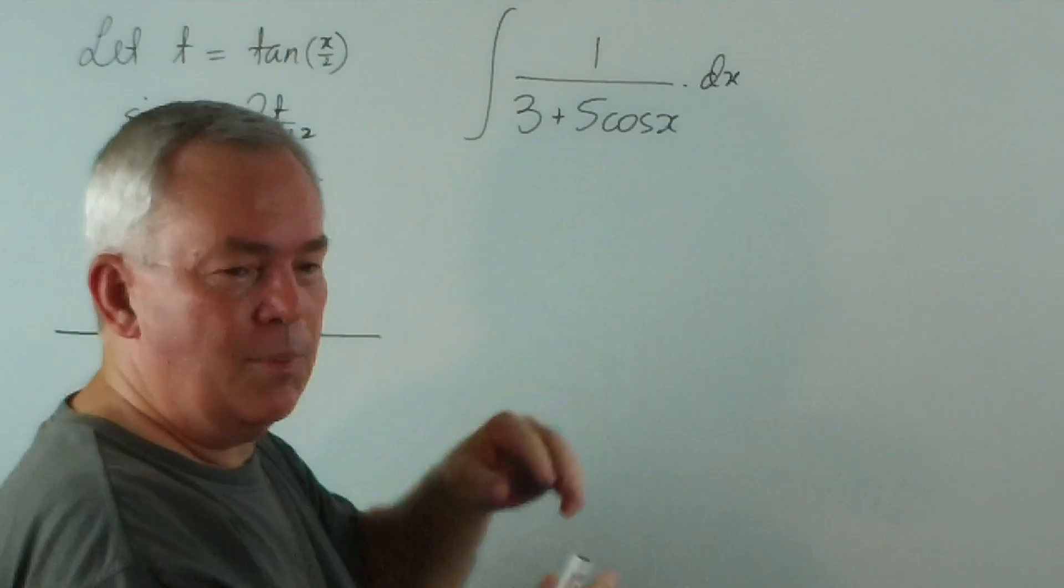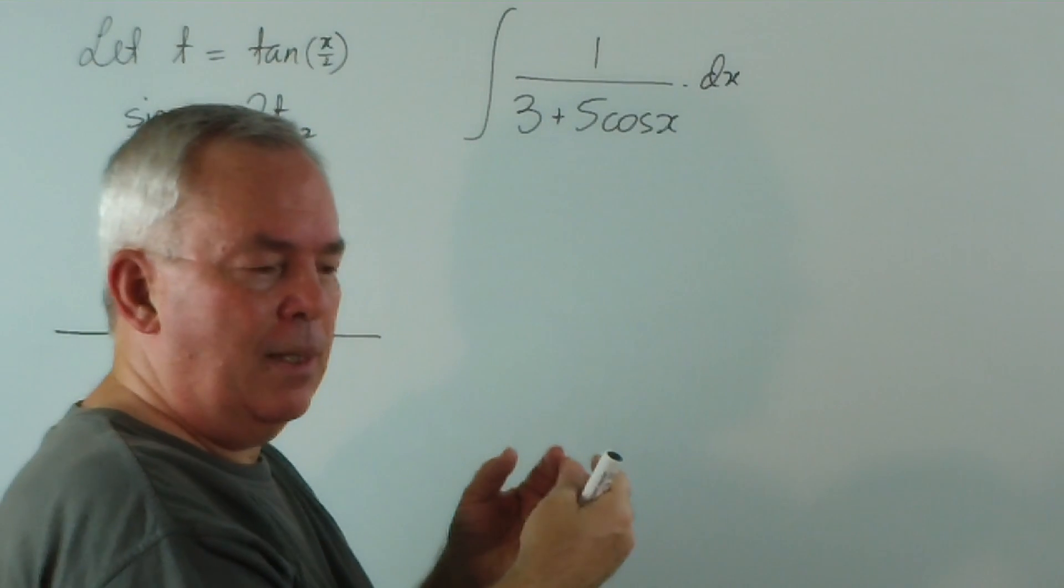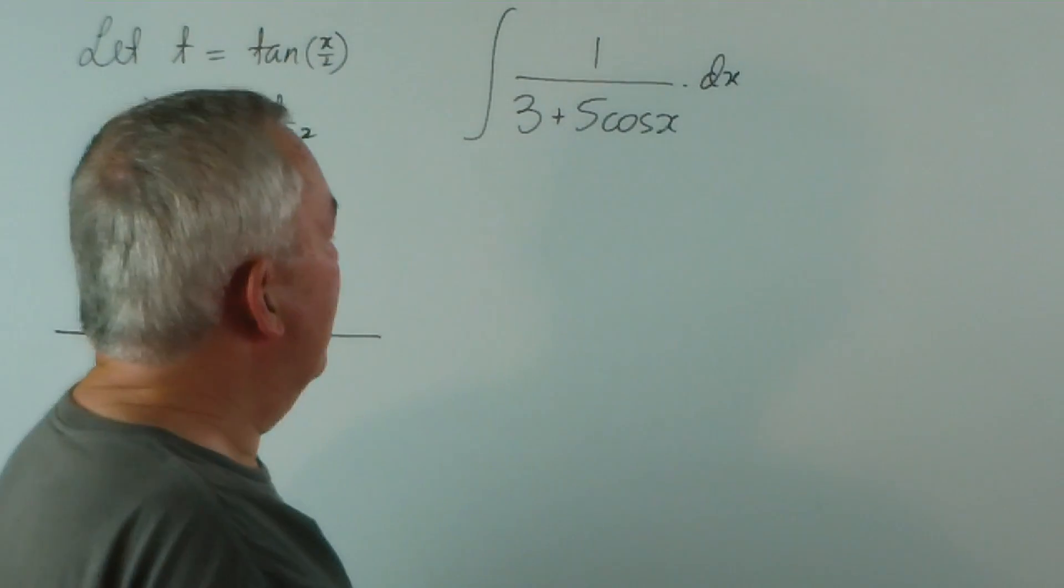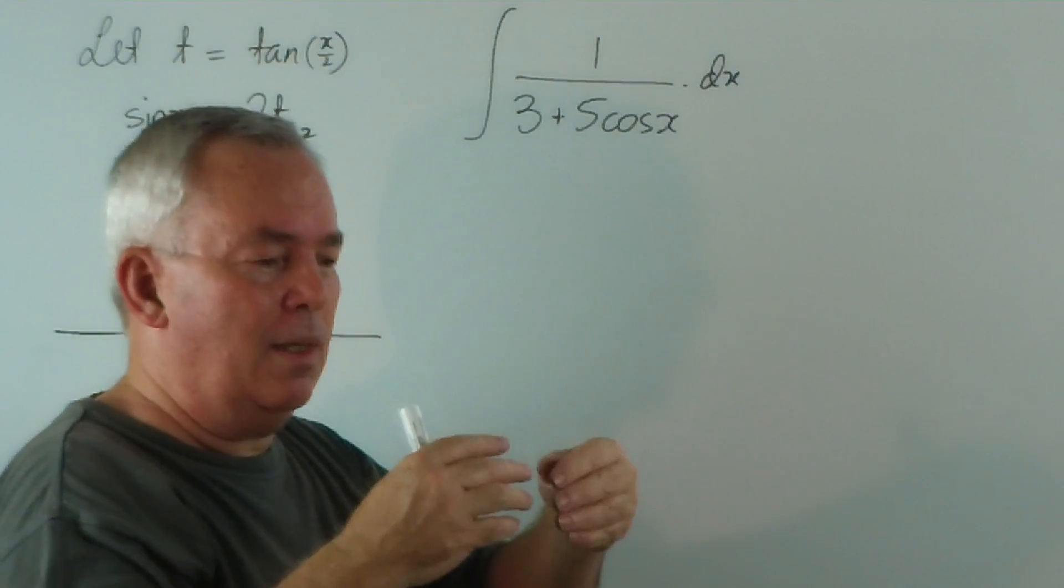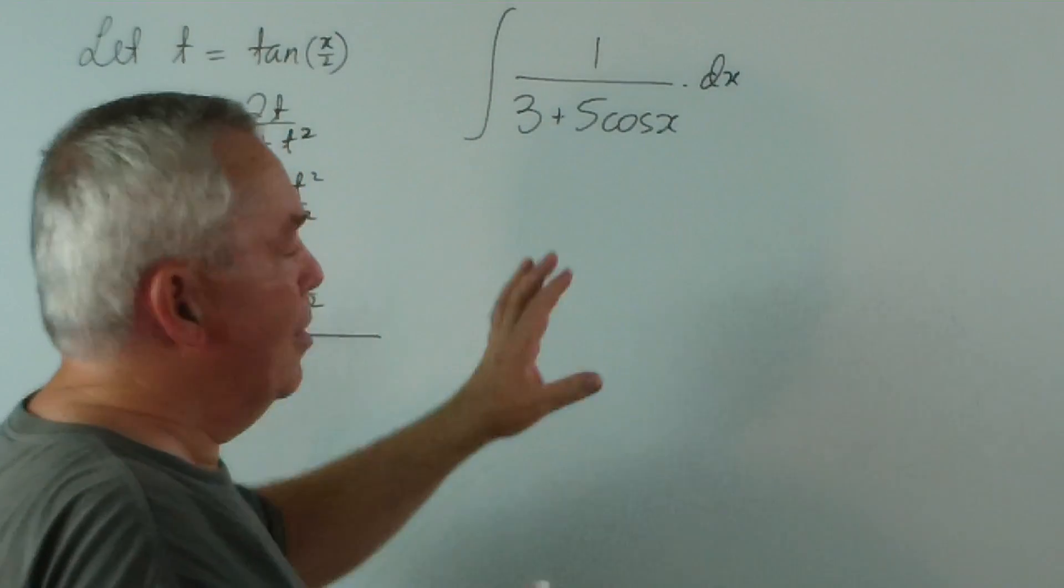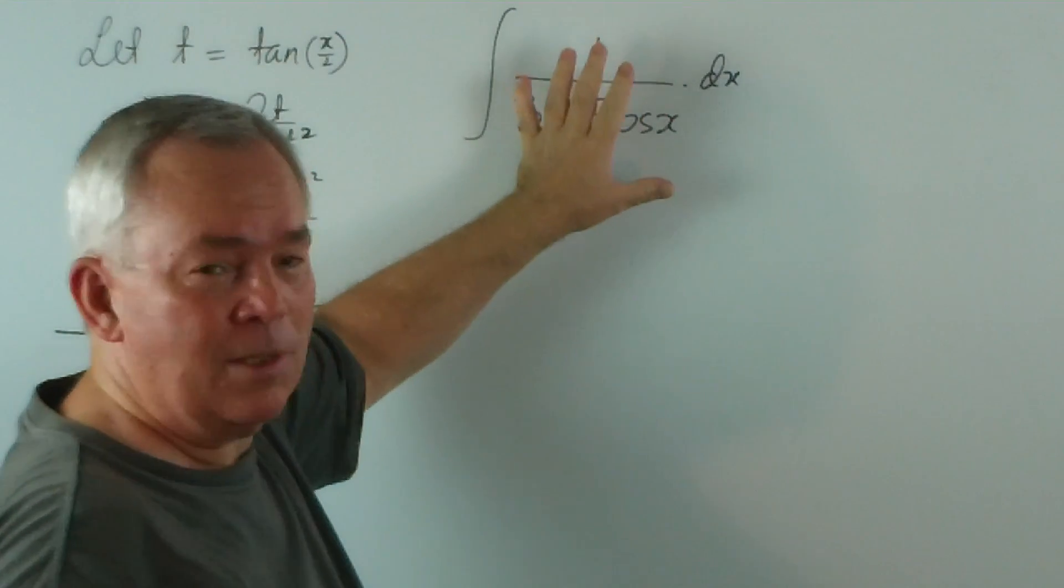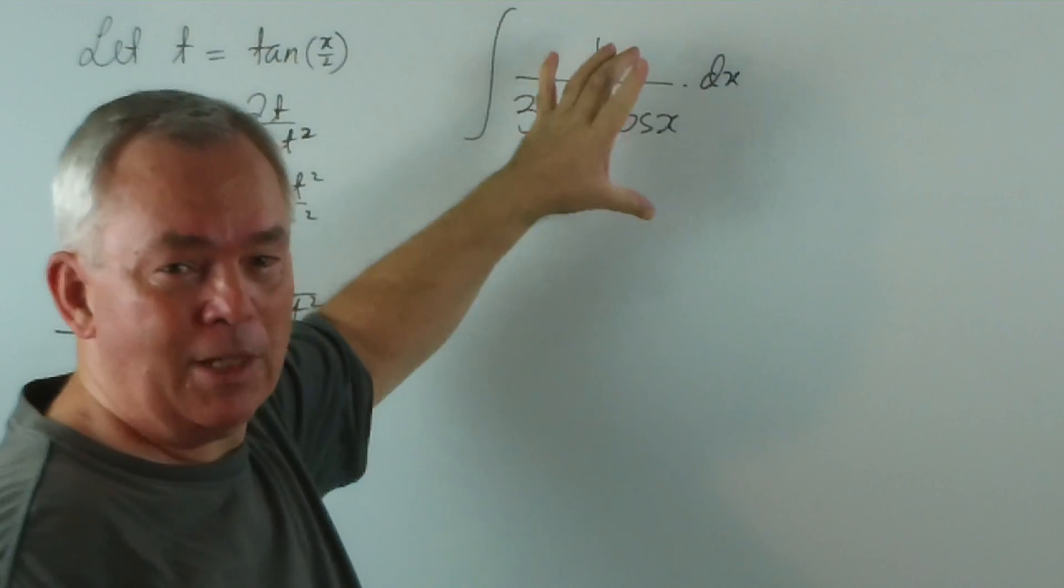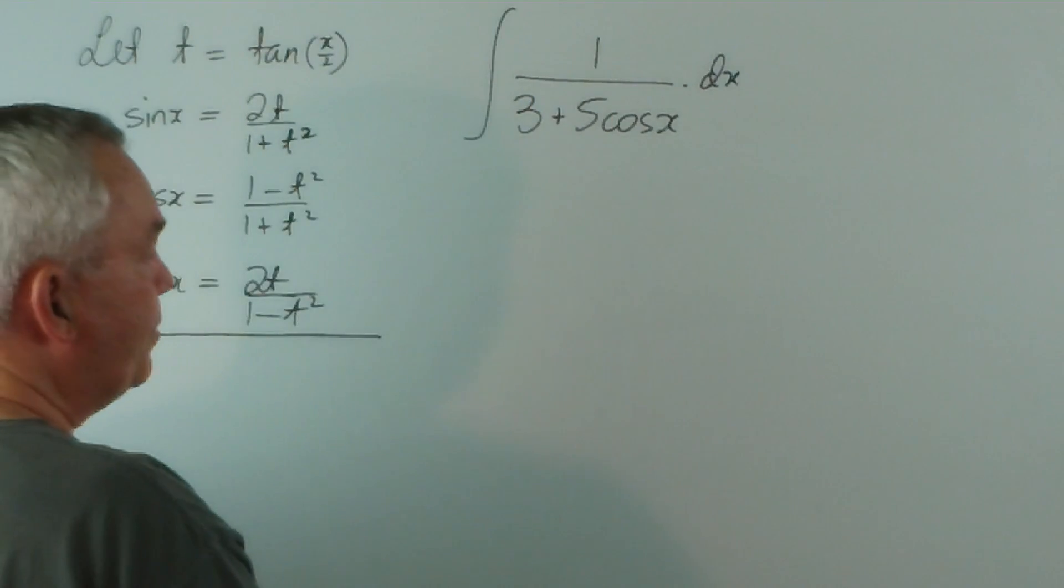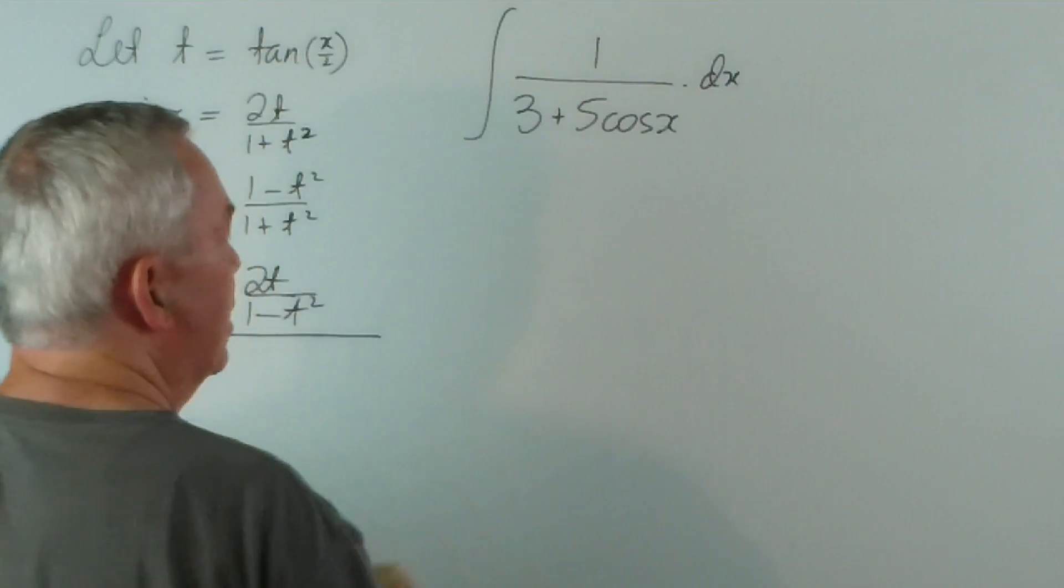if the polynomial on the bottom is factorisable, we can use partial fractions. If it turns out to be a sum of squares, we can get an inverse tan function. There can be a variety of things developed from this by converting them into a fraction based on polynomials. So this is very, very powerful for this kind of integral.